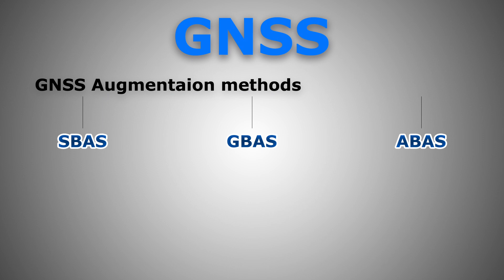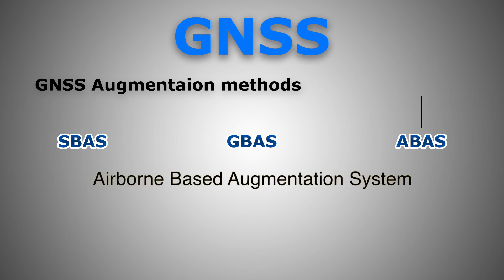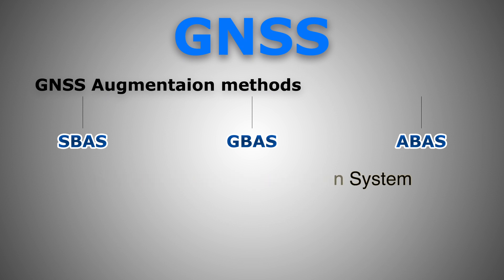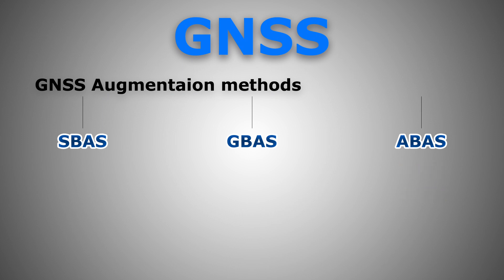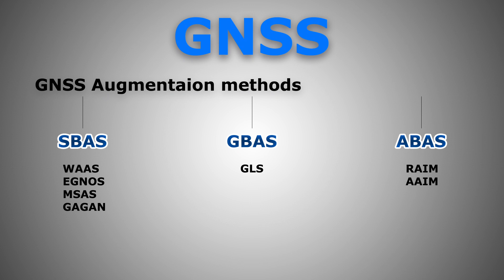Last but not least is ABAS — Airborne Based Augmentation System — which, unlike the previous two, focuses on integrity only and not on improving solution accuracy. Two types of techniques are envisaged under ABAS: RAIM (Receiver Autonomous Integrity Monitoring) and AAIM (Aircraft Autonomous Integrity Monitoring). An extensive detailed video about RAIM is coming soon, covering all its aspects and the principle of operations, so stay tuned.